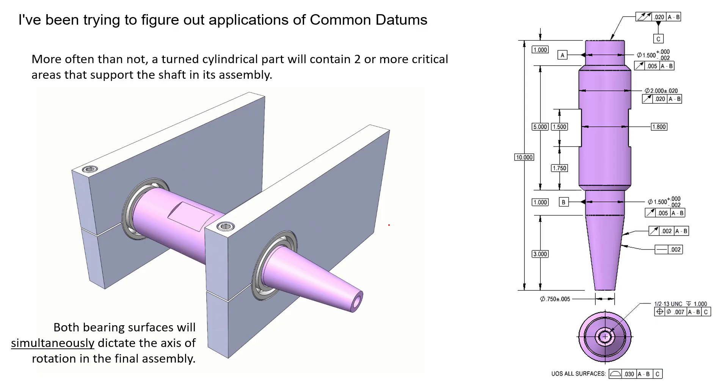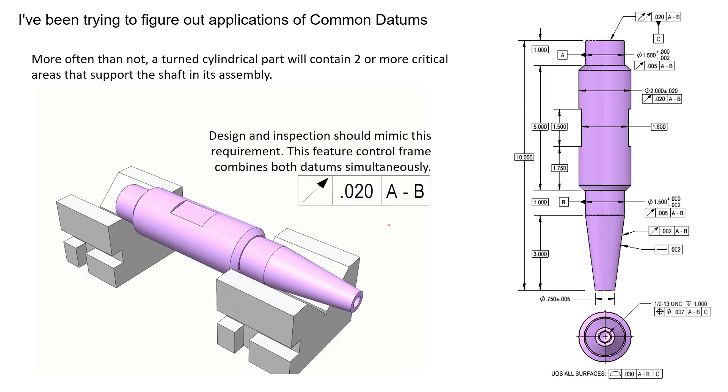When we try and apply tolerances to these drawings, we can see that it's important that we probably care about the coaxiality or the runout of all of our other features to this axis of rotation, because that's how it functions in the real world. We want to know the runout with respect to this axis of rotation.